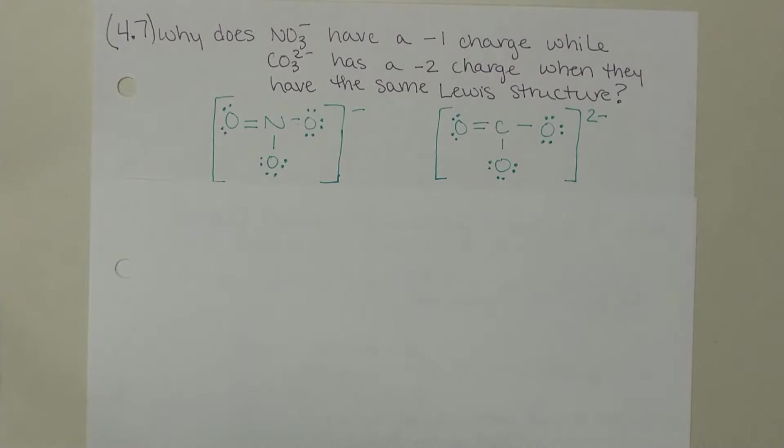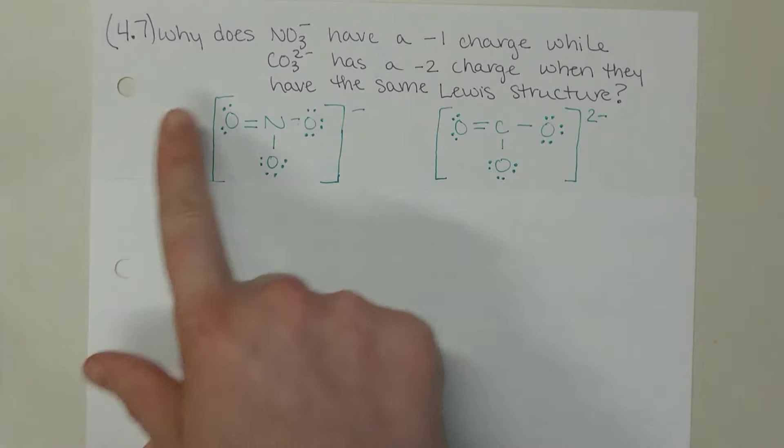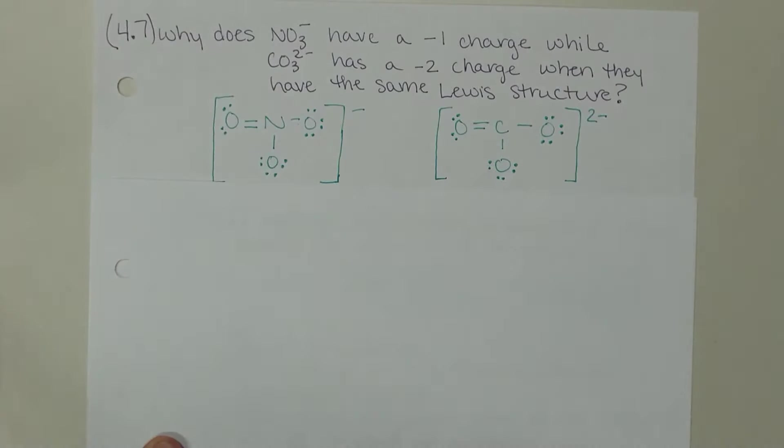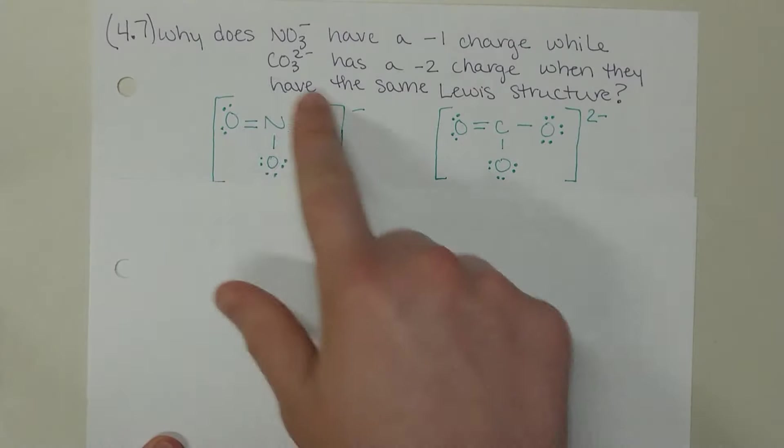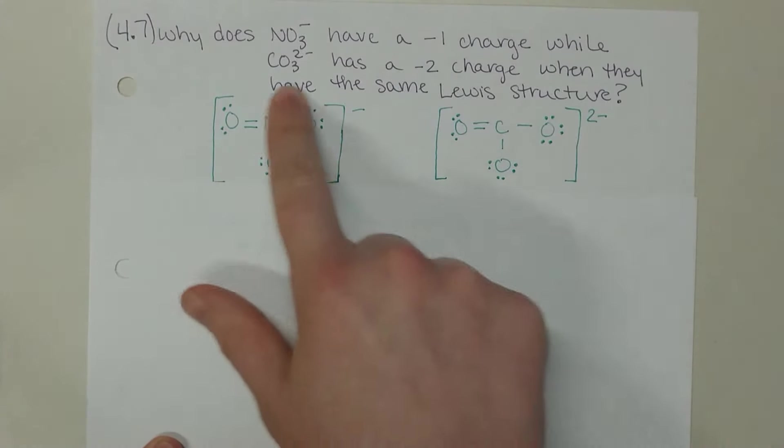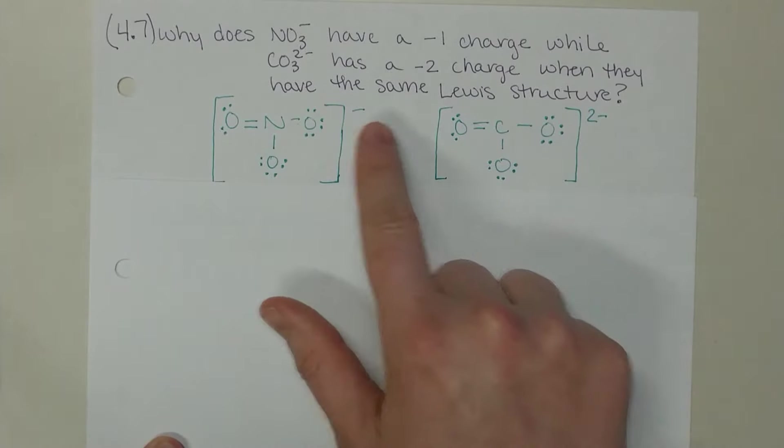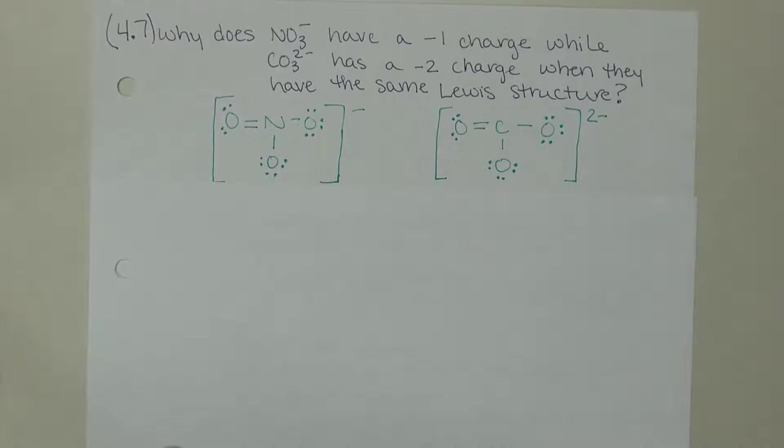This video talks about formal charge, section 4.7 in your textbook. We have nitrate here that has the same Lewis structure as carbonate, but somehow we have these two different charges. One of the ways that we can account for that or explain that is through formal charge.